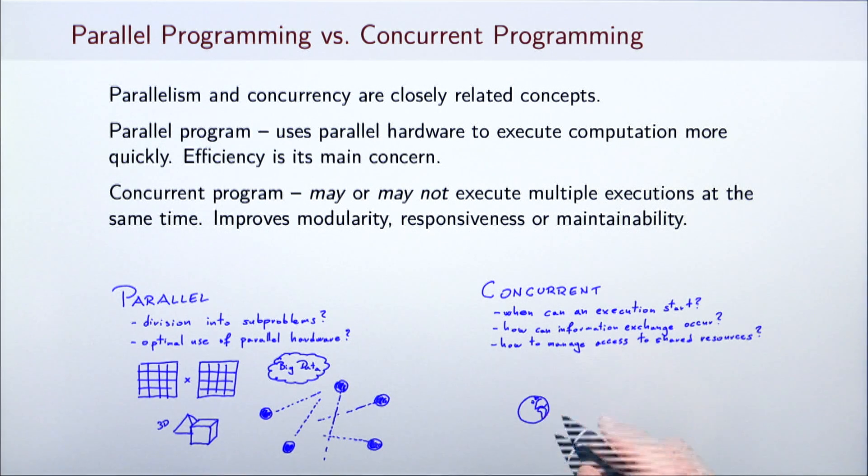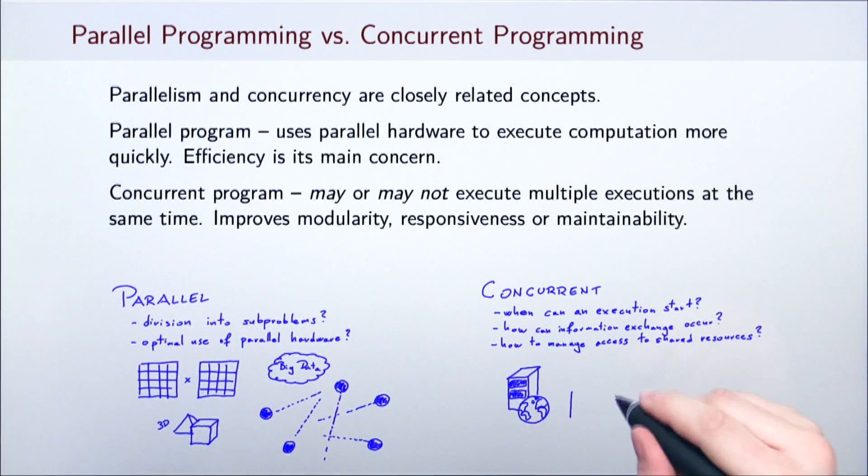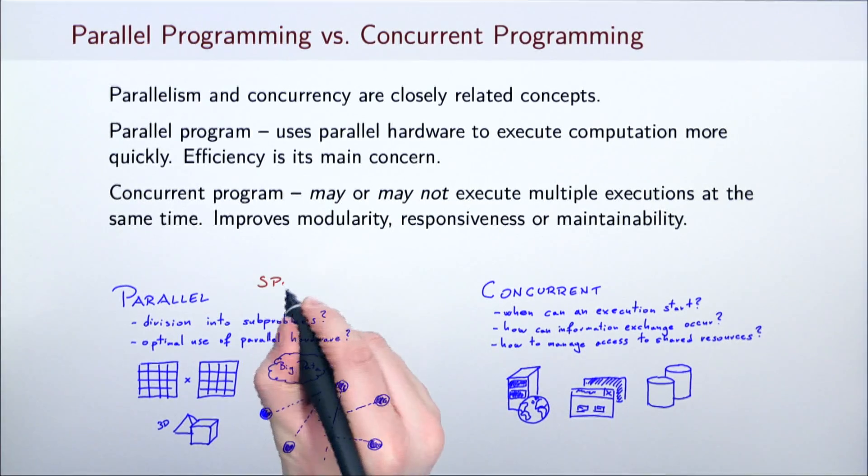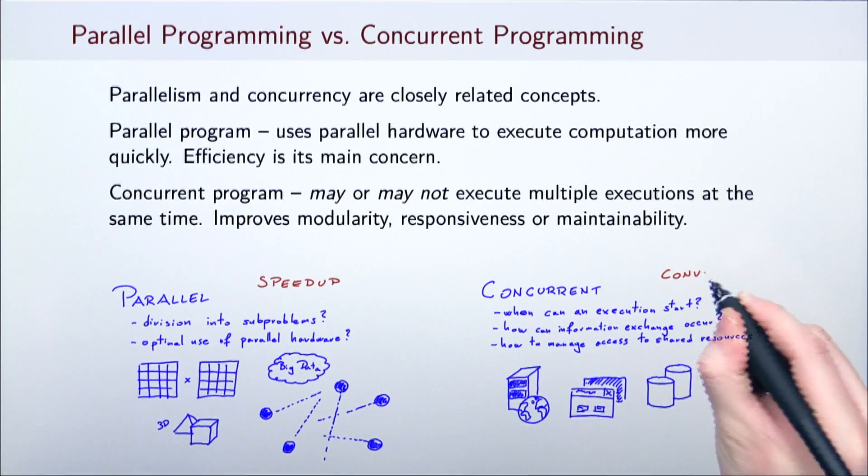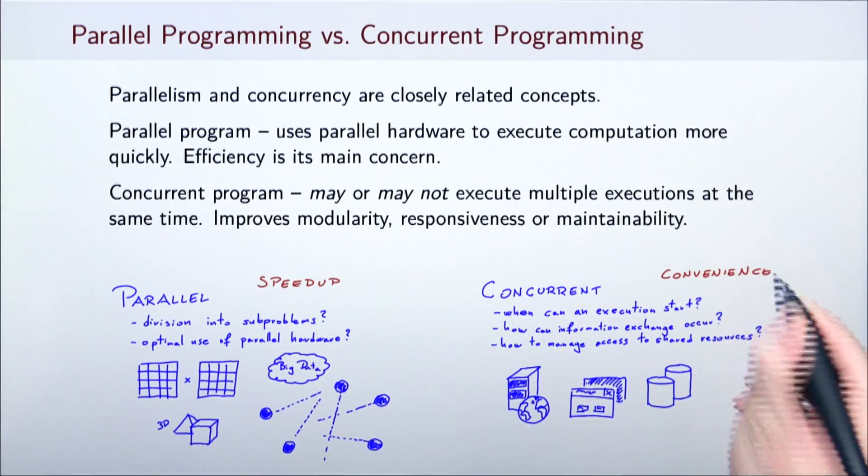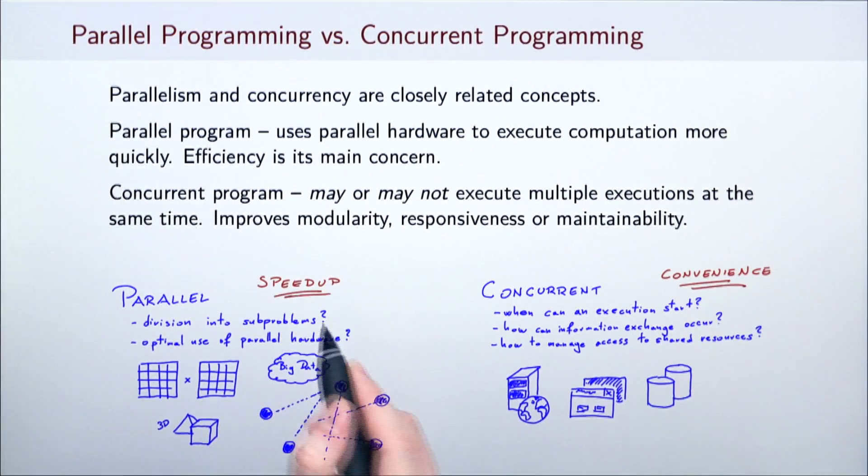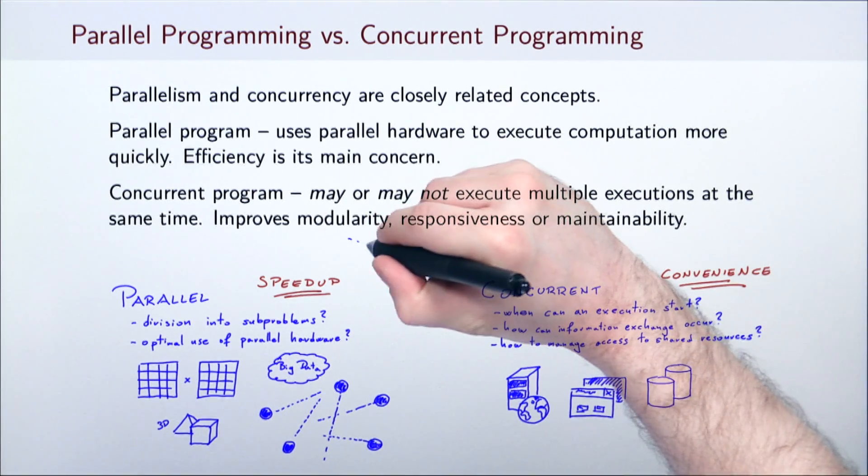Concurrent programming is targeted at writing asynchronous applications such as web servers, user interfaces, or databases. While parallel programming is concerned mainly with speedup, concurrent programming is concerned with convenience, better responsiveness, and maintainability.